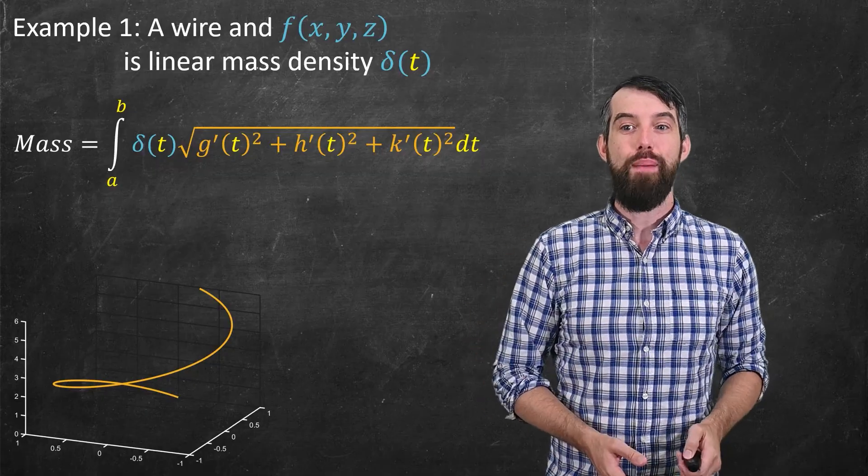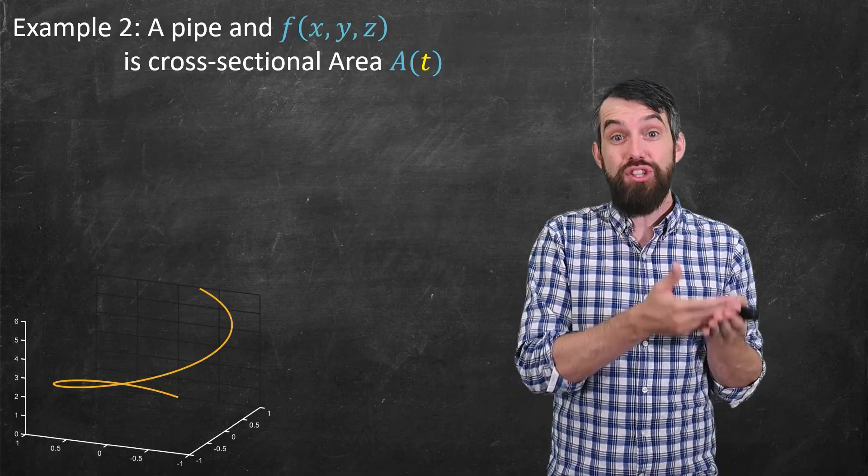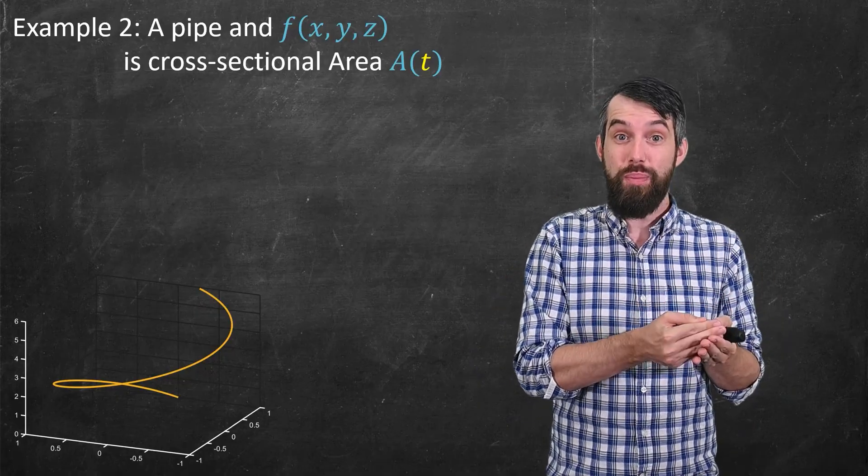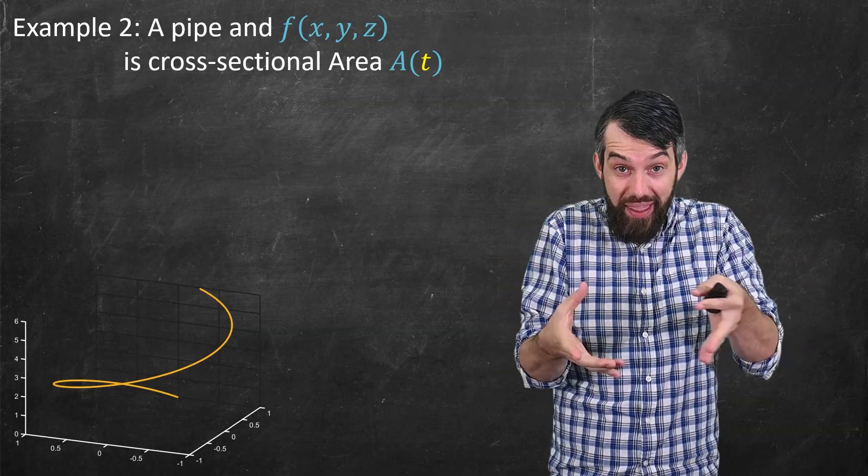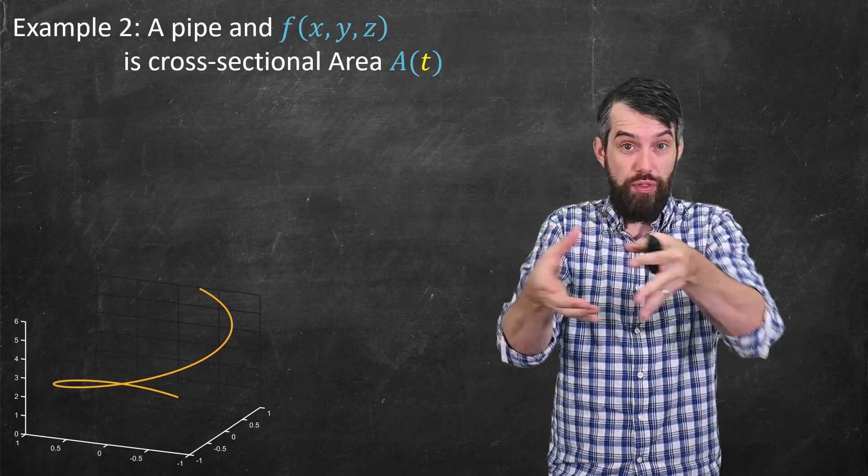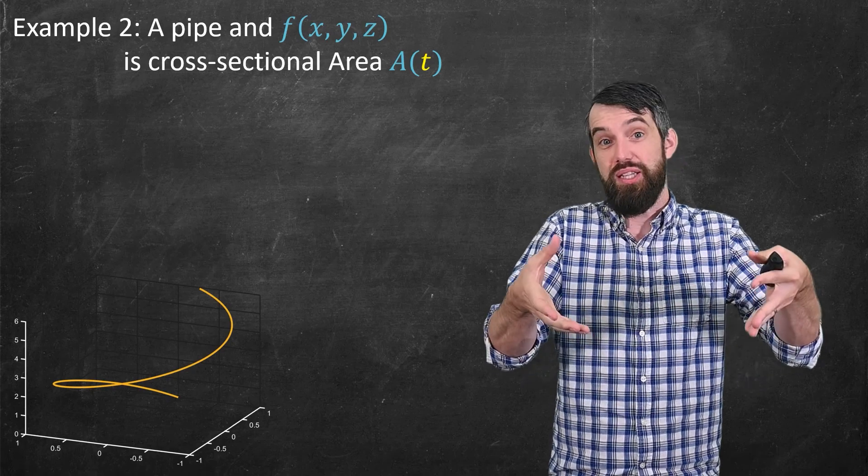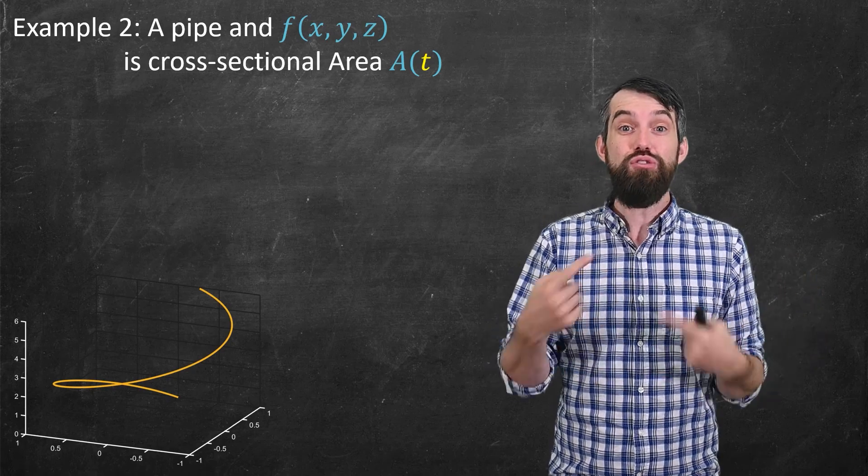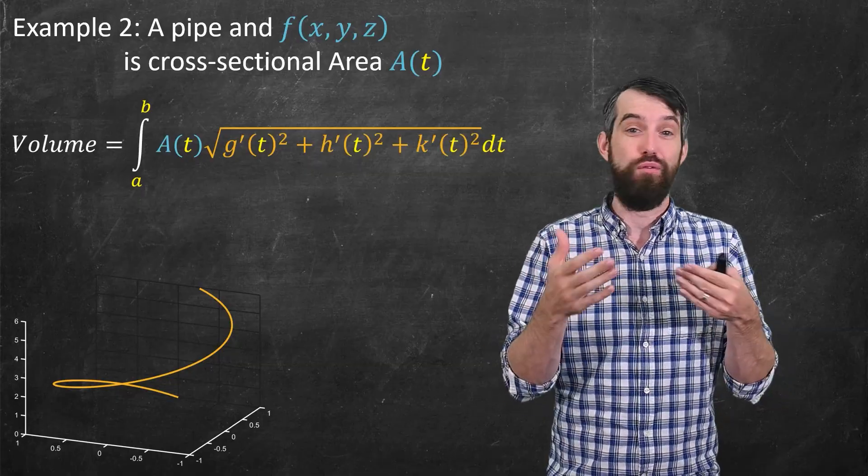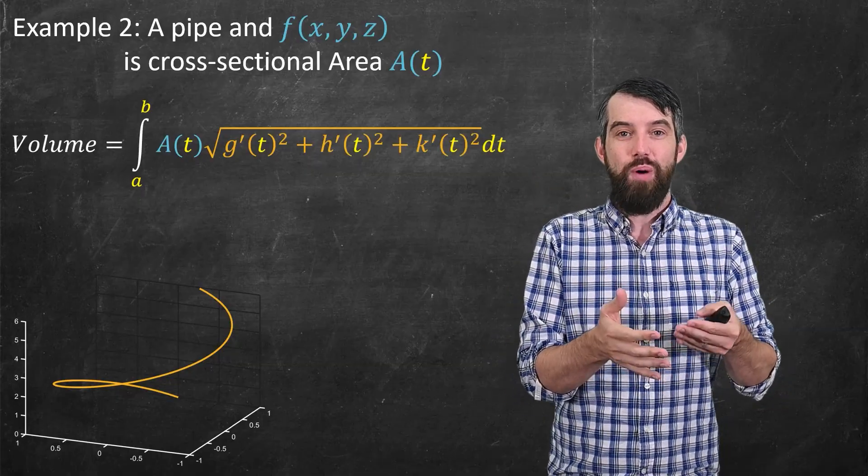Okay, let's see another example. Imagine this time you have a pipe, and your function f(x, y, z) represents a different width of the pipe as you go along the curve. So maybe at some spots the pipe is narrower, and some spots it's a little bit bigger. Then if I'm interested in figuring out, well, what is the total volume of water, say, in this pipe?